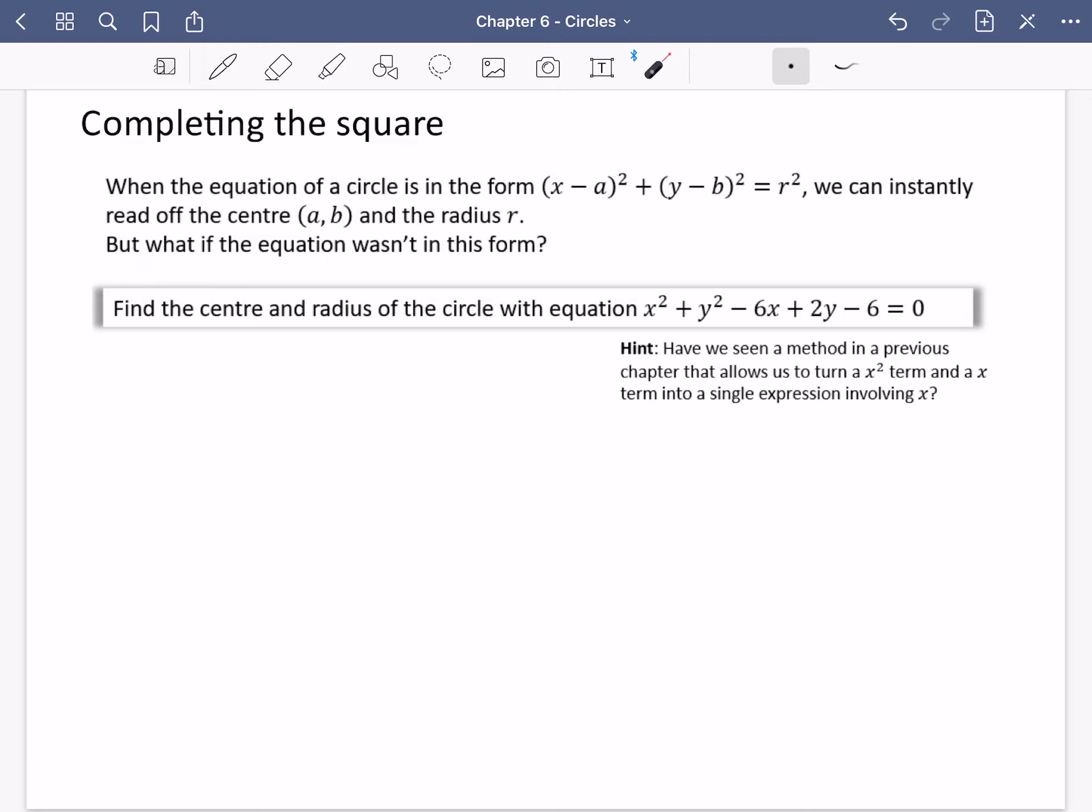So the question I have here wants us to find the center and the radius of the circle that has this equation. We've got x² + y² - 6x + 2y - 6 = 0. This is definitely in a strange kind of form. It doesn't look like the one that we're familiar with. And I've got a hint. Have we seen a method in a previous chapter that allows us to turn an x² term and an x term into a single expression involving x?